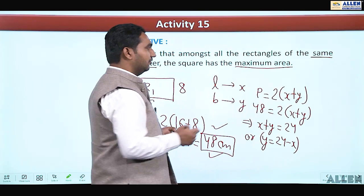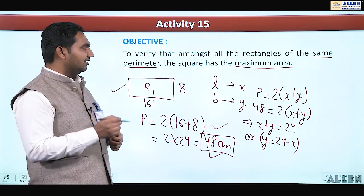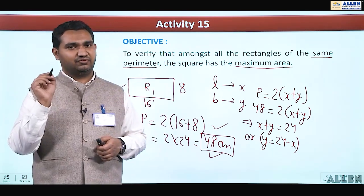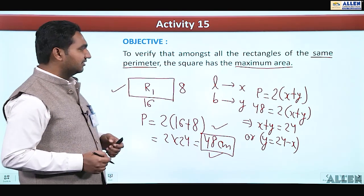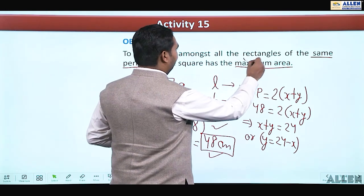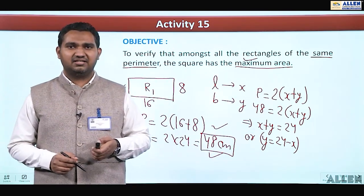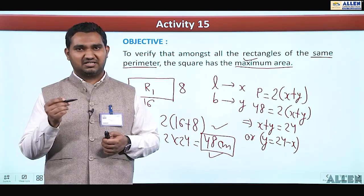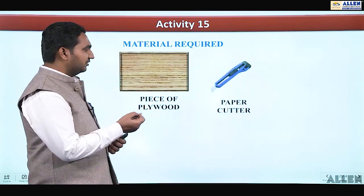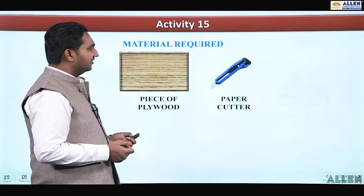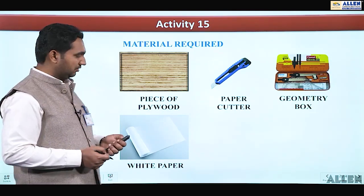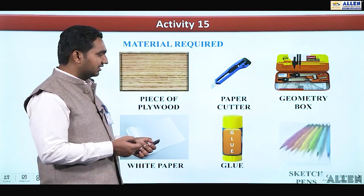We have obtained the value of y = 24 − x. Taking the same perimeter, x + y = 24. We will use this further when we calculate the area, since we have to focus on maximum area. Now we will move on to the materials required: a piece of plywood, paper cutter, geometry box, white sheet of paper, glue, and sketch pens.